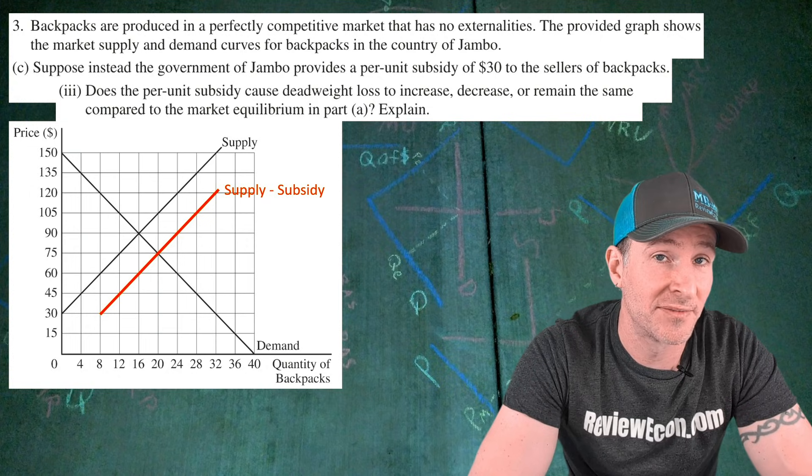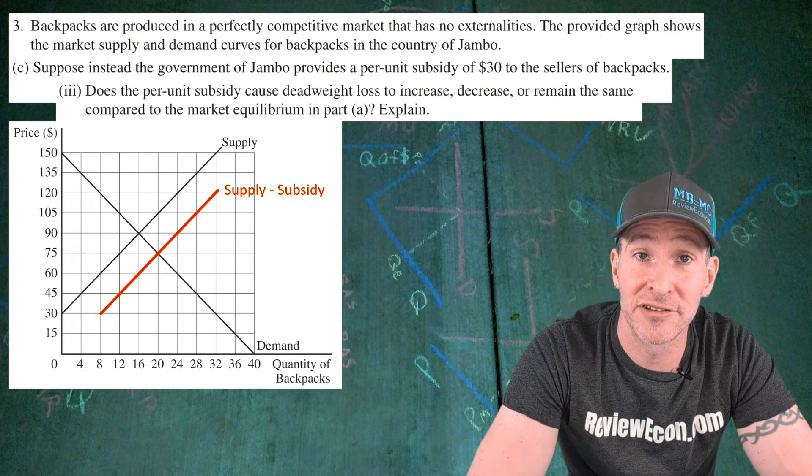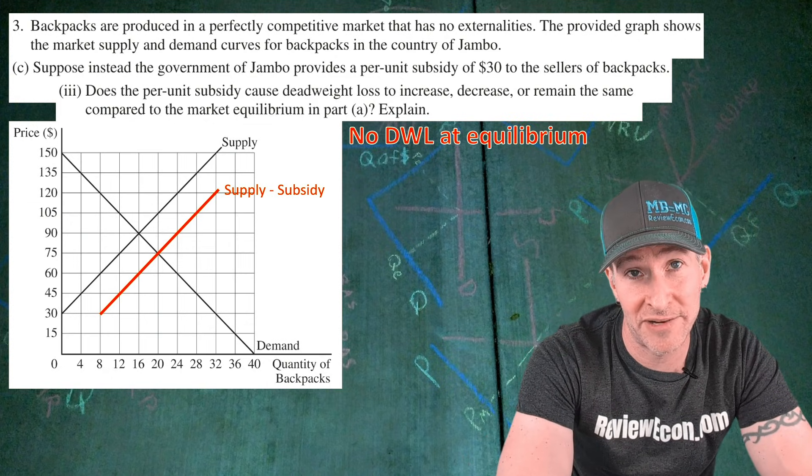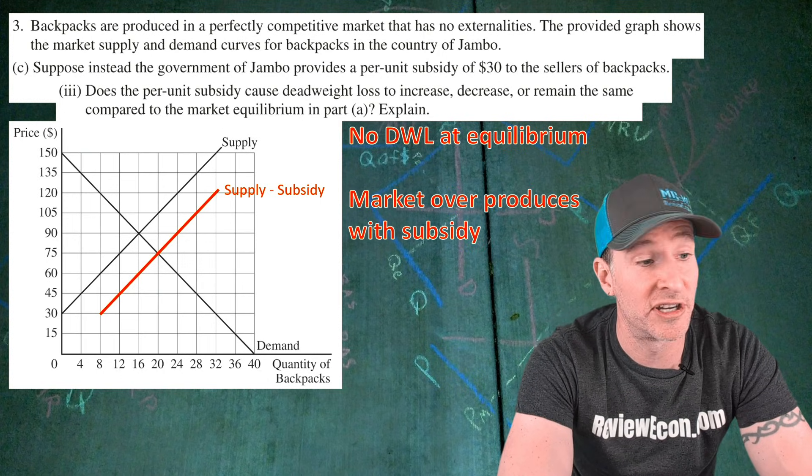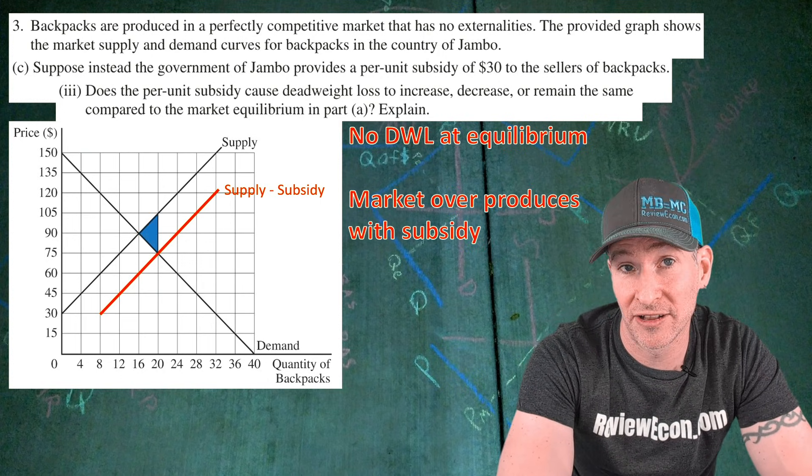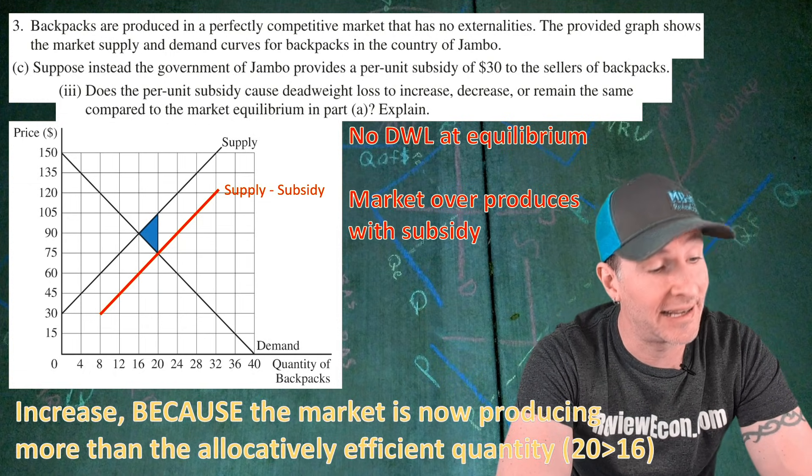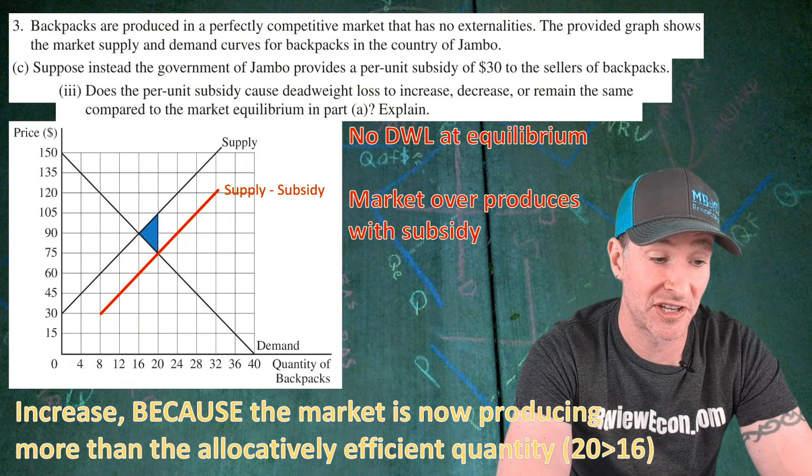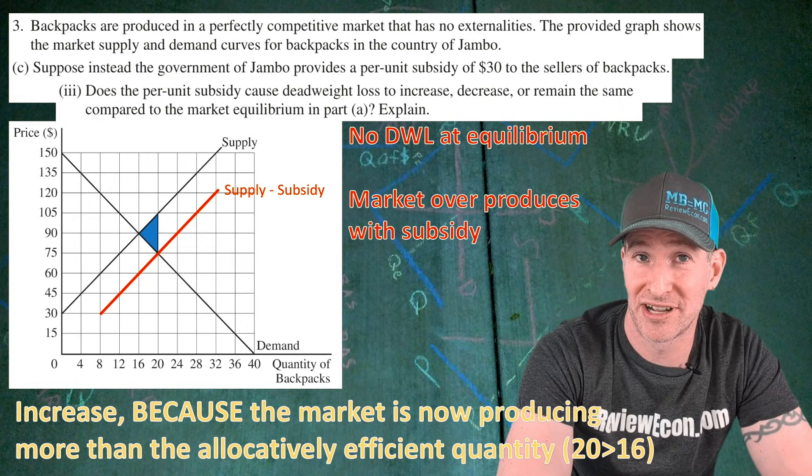For part C triple I, we are asked if the subsidy causes deadweight loss to increase, decrease, or remain the same compared to the market equilibrium. And we have to explain. Remember, since there are no externalities, there is no deadweight loss at the market equilibrium. But with the subsidy, the market is going to overproduce. And that means we're going to have that triangle of deadweight loss. It points to the equilibrium quantity where there was none. So that leads us to our answer: increase, because the market is now producing more than the allocatively efficient quantity. 20 units is greater than 16 units. And if you have an answer something like that, you get your next point.